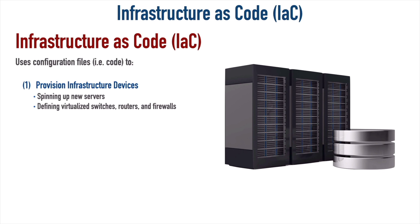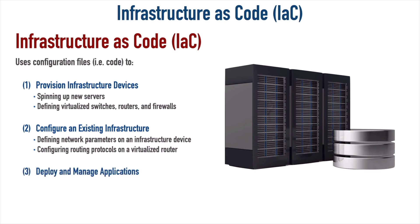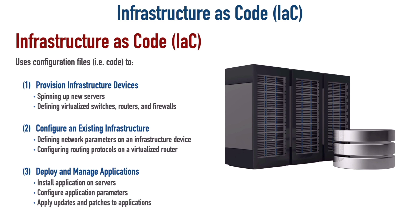In addition to provisioning devices, this code can also configure infrastructure that we already have — maybe defining parameters for a network interface card: IP address, subnet mask, default gateway. Maybe we configure routing protocols like OSPF on a virtualized router. We might also use infrastructure as code to deploy and manage applications — installing them on servers, setting configuration parameters, and over time applying updates and patches. We can do all that with code.